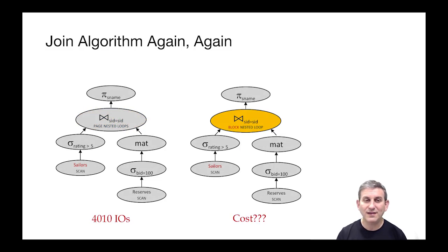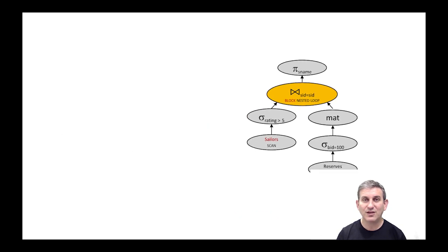Now let's go back on the left to our page nested loops join and ask the obvious question of what if we used a better algorithm like block nested loops join? What would be the benefit of doing that? So let's take the cost there.